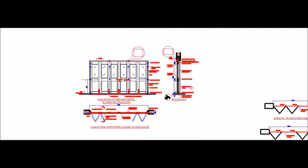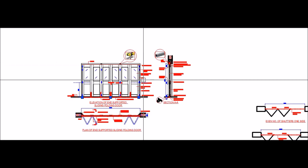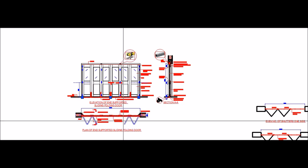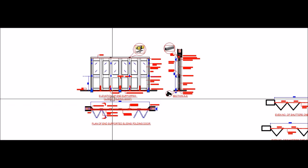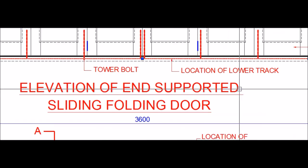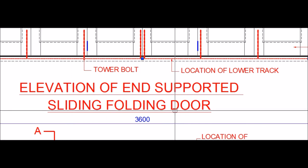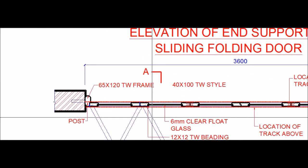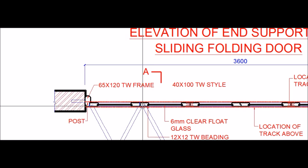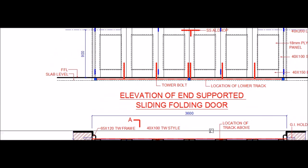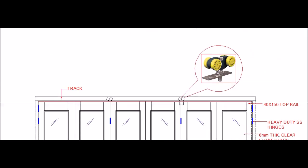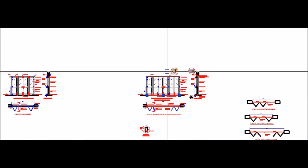This is how the sliding folding door differs slightly from the folding door. This type is called an end-supported sliding folding door. The rollers are positioned at the end of the shutter, and therefore this is called end-supported. The door is hinged at one end and suspended by two rollers at the ends.